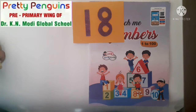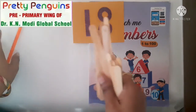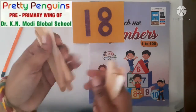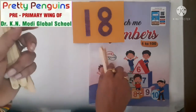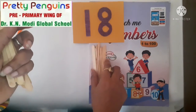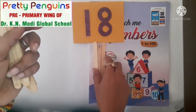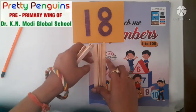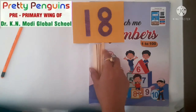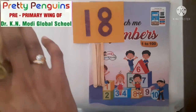Now see kids, I have some ice cream sticks. This is a group of 10 ice cream sticks. We call this 10s — 10 ice cream sticks, this is a group of 10s.